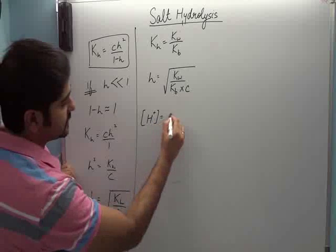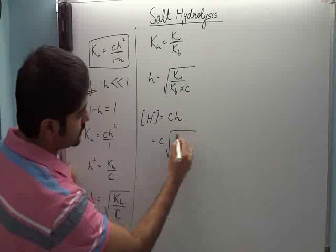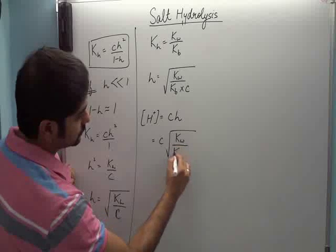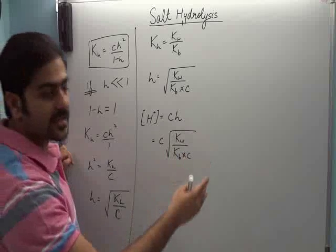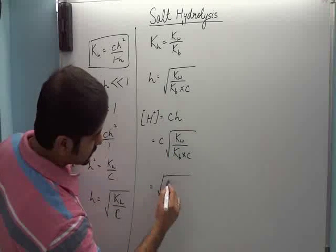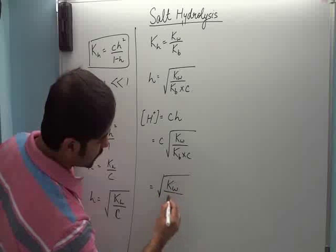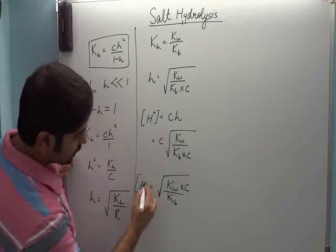H plus ki value is C into H. So C se multiply karte is poori cheez ko. Ye C jab under root ke andar aayega to C square ban jayega. C se C cut jayega. So this will become Kw upon Kb and this into C. To ye H plus ki value.